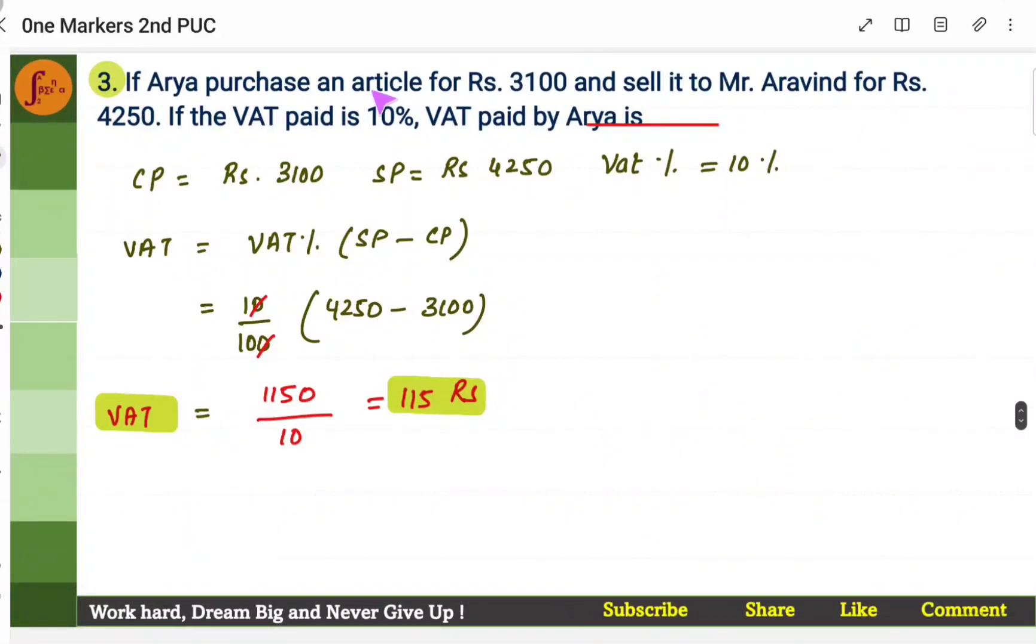Let's go to the next problem. If Aria purchases an article for Rs. 3100, that means cost price is Rs. 3100, and sells it to Mr. Arvind for Rs. 4250, so selling price is Rs. 4250, and the VAT paid is 10%. So what is the VAT that Aria needs to pay? So Aria is selling it to Arvind. So how much should Aria pay as VAT? So he bought it at Rs. 3100, that means that is a cost price. He is selling it at Rs. 4250, that means that is a selling price. And the VAT percent is 10%, 10 by 100. So the VAT is Rs. 115.